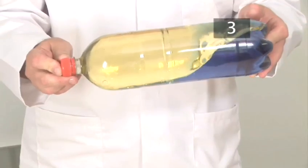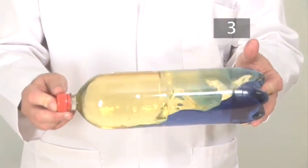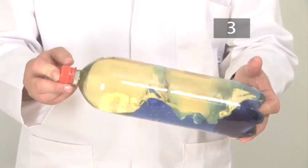Tilt the bottle from side to side. Watch. The water and oil do not mix together but instead they form layers. The oil floats on the water which makes it move like a wave.